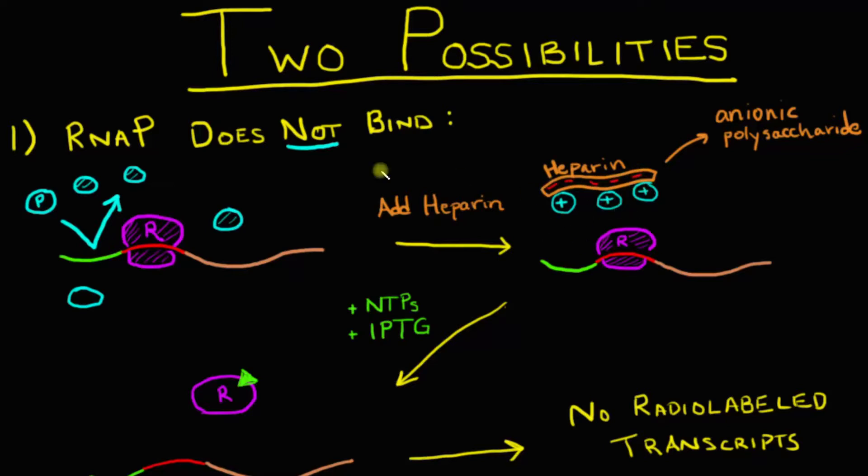Now RNA polymerase is actually a cationic protein, which means it has positive charges. So all the RNA polymerase that is floating around in solution will be scavenged, bound to by heparin, which will block it from initiating transcription and thus binding to DNA. So all the RNA polymerase that is not bound to DNA already will be bound to heparin.